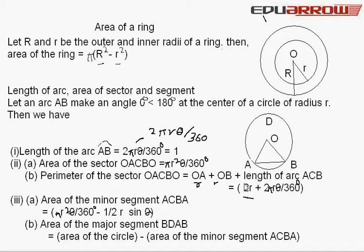Number three: Area of the minor segment ACBA is equal to πr²θ upon 360 degrees minus 1/2 r² sin θ.